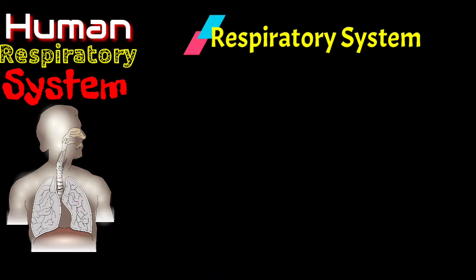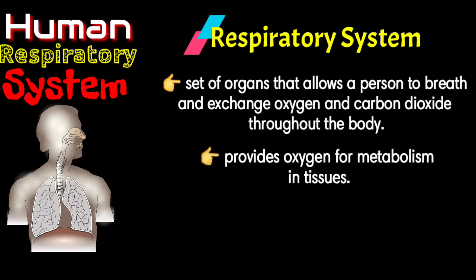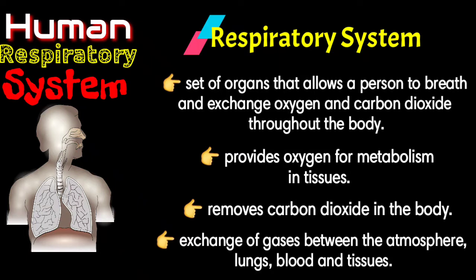The respiratory system is the set of organs that allows a person to breathe and exchange oxygen and carbon dioxide throughout the body. It also provides oxygen for metabolism in tissues. The respiratory system removes carbon dioxide. It is also responsible for the exchange of gases between the atmosphere, lungs, blood, and tissues.